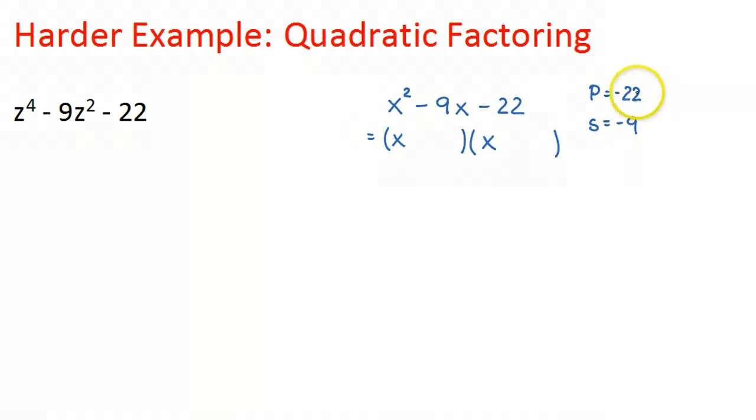So in this case, what I then know is that since the product is negative and the sum is negative, we have to have a negative and positive number, and the negative number has to be larger. So I know two numbers that multiply to give you negative 22 are negative 11 and 2. So therefore, negative 11 times 2 is, of course, negative 22. Negative 11 plus 2 is negative 9.